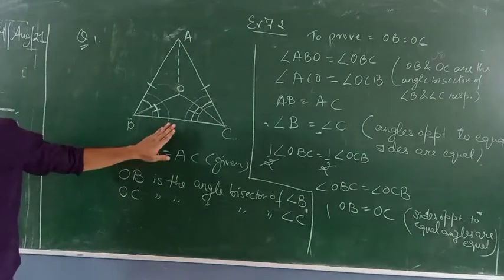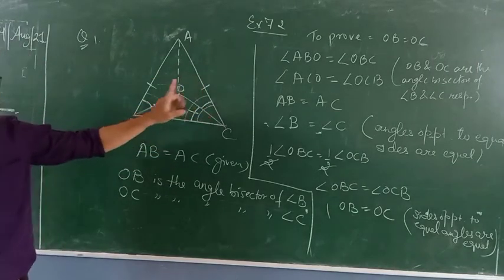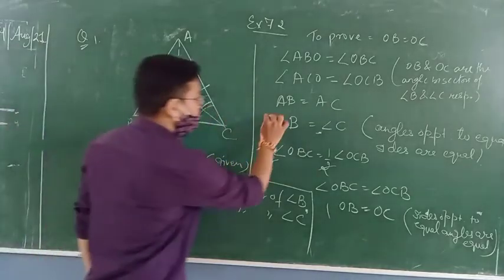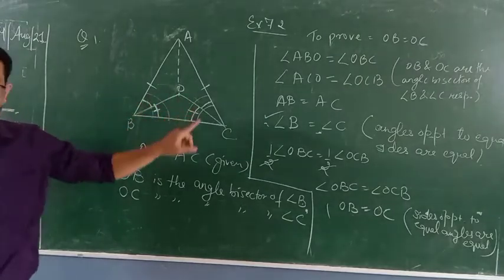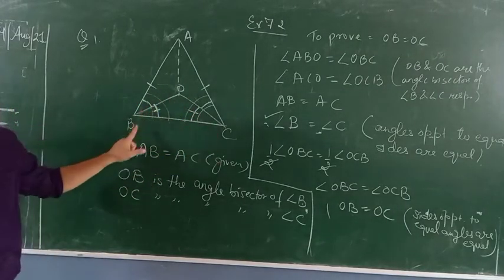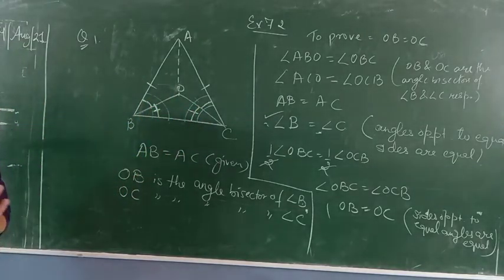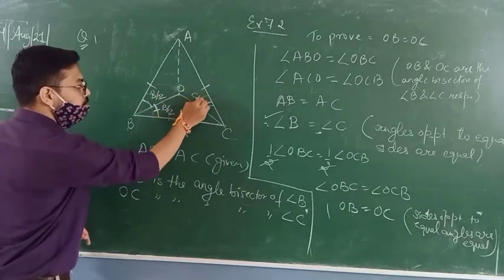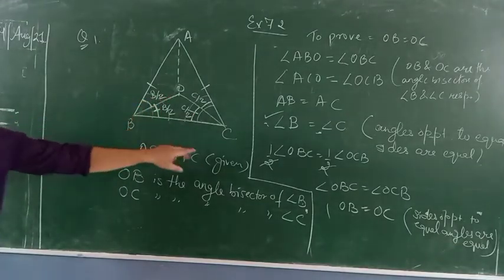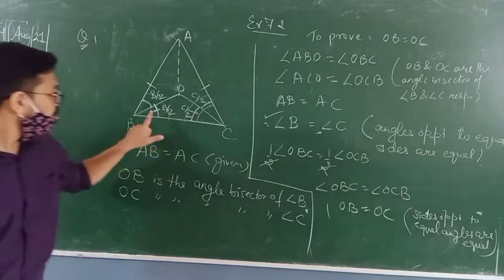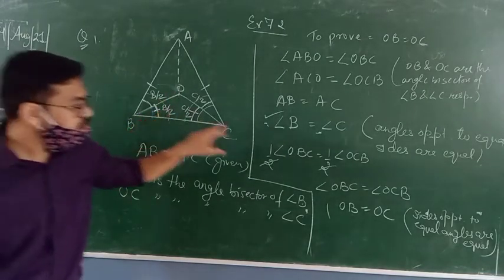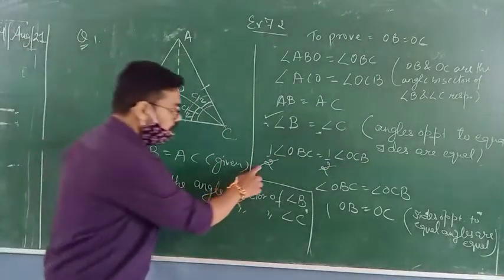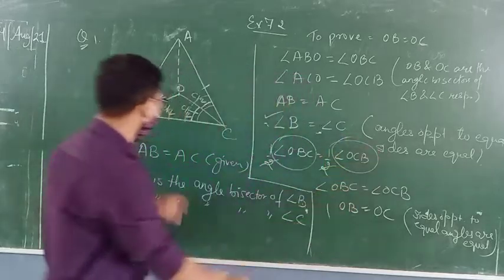In the isosceles triangle where AB equals AC, the condition is given. If AB equals AC, what are the opposite angles? They are equal, so angle B equals angle C. Then OB and OC are the angle bisectors of angle B and angle C respectively. So OBC equals half of angle B, and OCB equals half of angle C. Since angle B equals angle C, we get OBC equals OCB.